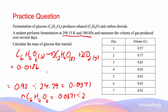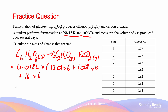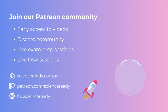Finally, to calculate the mass of glucose we multiply the number of moles by the molar mass: mass = 0.0186 × (12.01×6 + 1.008×12 + 16×6) = 3.3 grams. This is given to two significant figures because the smallest number of significant figures used in our calculations is two, as given in the table.